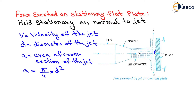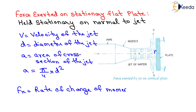Hence the jet after striking will get deflected through 90 degrees. Hence the component of the velocity of the jet in the direction of the jet after striking will be 0. So the force exerted by the jet on the plate in the direction of the jet will be equals to fx, which will be equals to rate of change of momentum in the direction of force.